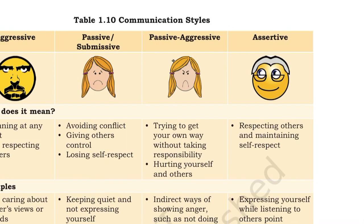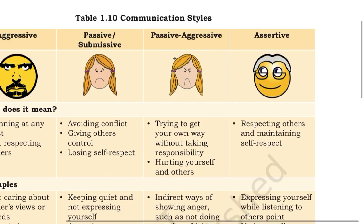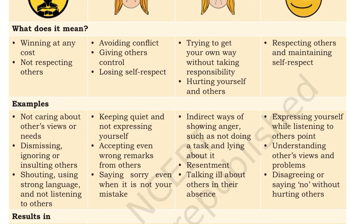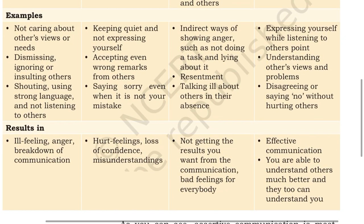Next communication style is passive aggressive. इसमें क्या होगा — आप जो आपकी responsibility है उसे लिए बिना, किसी भी तरीके से बस अपनी conversation करनी है, trying to get out your own way, अपना खुद का रास्ता निकालना चाहते हो, अपना खुद का point of view prove करना चाहते हो, दूसरों को भी hurt करते हो और खुद को भी। Examples — indirect तरीके से गुस्सा दिखाना, कोई काम न करना, झूठ बोलना, resentment करना, दूसरों की absence में उनके बारे में गलत बोलना। As a result — जो आप चाहते हो कि result मिले वो नहीं मिलेगा, दूसरों के प्रति bad feelings आ जाएंगी, आप दूसरों के बारे में बुरा सोचना शुरू कर दोगे।